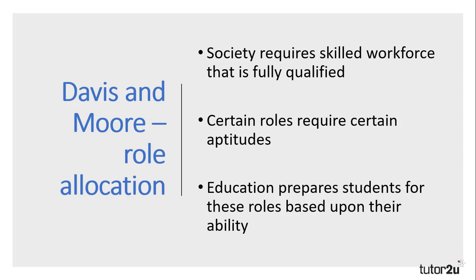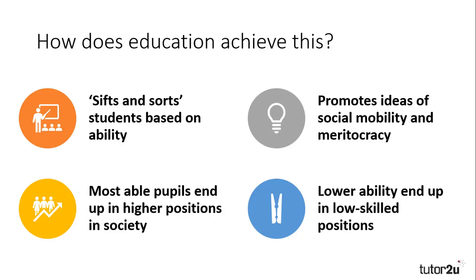Davis and Moore suggested that schools were uniquely placed to prepare students for their future roles based upon their ability. So how does education achieve this? Firstly, it sifts and sorts students based upon their abilities. Those with aptitudes for science are persuaded to go down a more scientific route, whilst those with greater interpersonal skills are shifted into roles that will lead them onto success in people management.